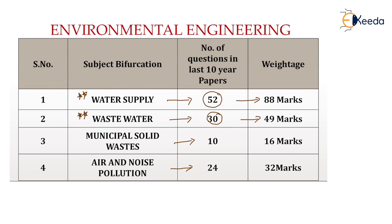The last two portions — municipal solid waste and air and noise pollution — together comprise of almost 34 questions in the last 10 years, with a weightage of almost 16 and 32 marks respectively. In the recent three years, many questions had been asked from municipal solid waste as well as air and noise pollution, so they also become important from the GATE point of view.